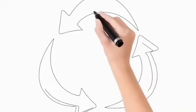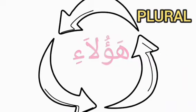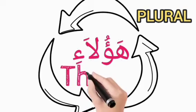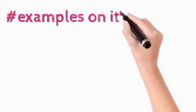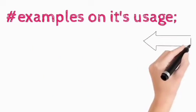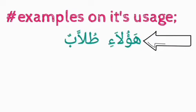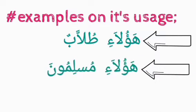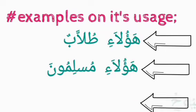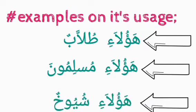If you come to the aspect of haulai, which is the plural form for haza, it simply means 'these', indicating a number above two. Examples: haulai tulabun — these are students; haulai muslimuna — these are Muslims; haulai shuyuhun — these are scholars.